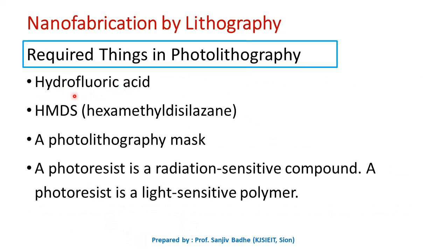These are the things which are needed in nanofabrication by photolithography. The first one is hydrofluoric acid. This hydrofluoric acid is needed to clean the semiconductor wafer thoroughly. When the semiconductor wafer is dipped into the hydrofluoric acid, it removes the silicon dioxide from the wafer surface. Next is HMDS — Hexamethyldisilazane. It is a primer which is coated on the semiconductor wafer surface to improve the adhesion of photoresist on the surface of the substrate.